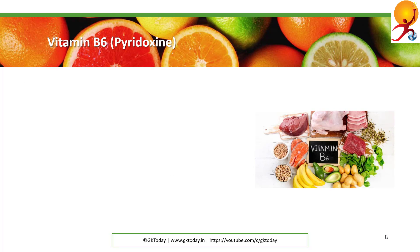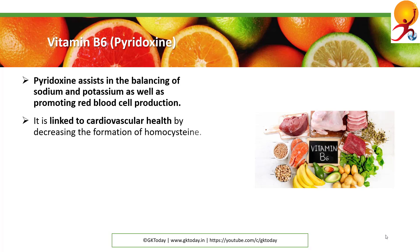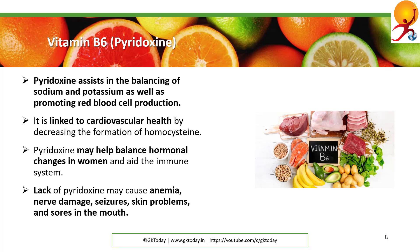Vitamin B6, or pyridoxine, assists in balancing sodium and potassium as well as promoting red blood cell production. It is linked to cardiovascular health by decreasing the formation of homocysteine. Pyridoxine may help balance hormonal changes in women and aid the immune system. Lack of it can cause anemia, nerve damage, seizures, skin problems, and sores in the mouth.